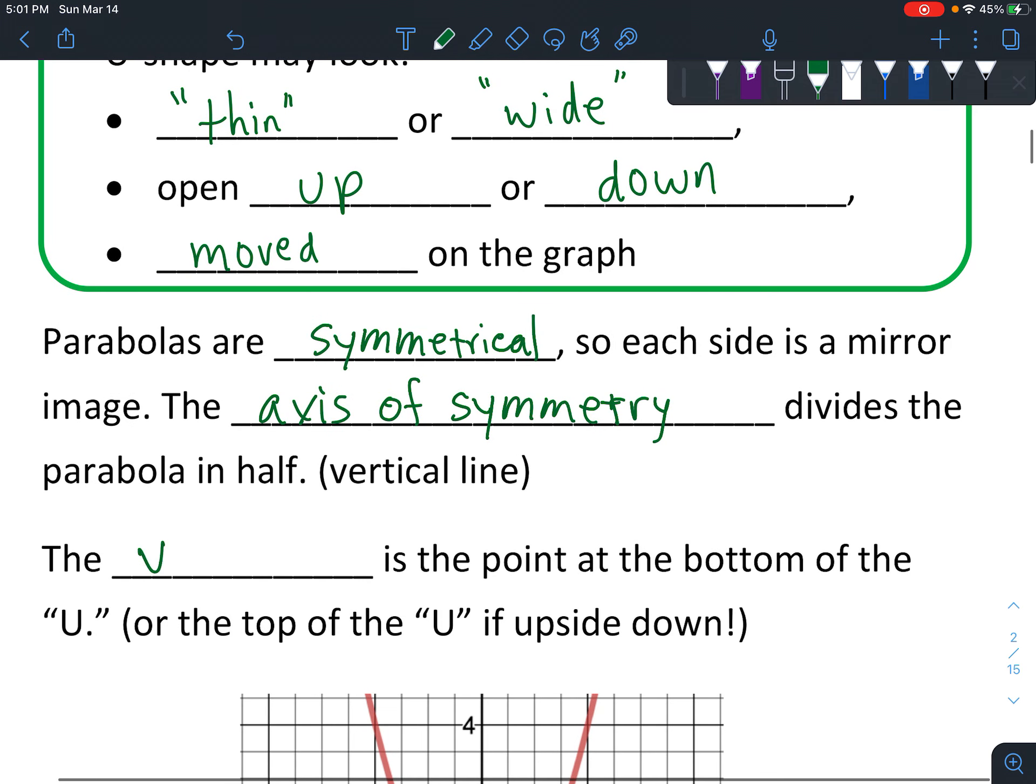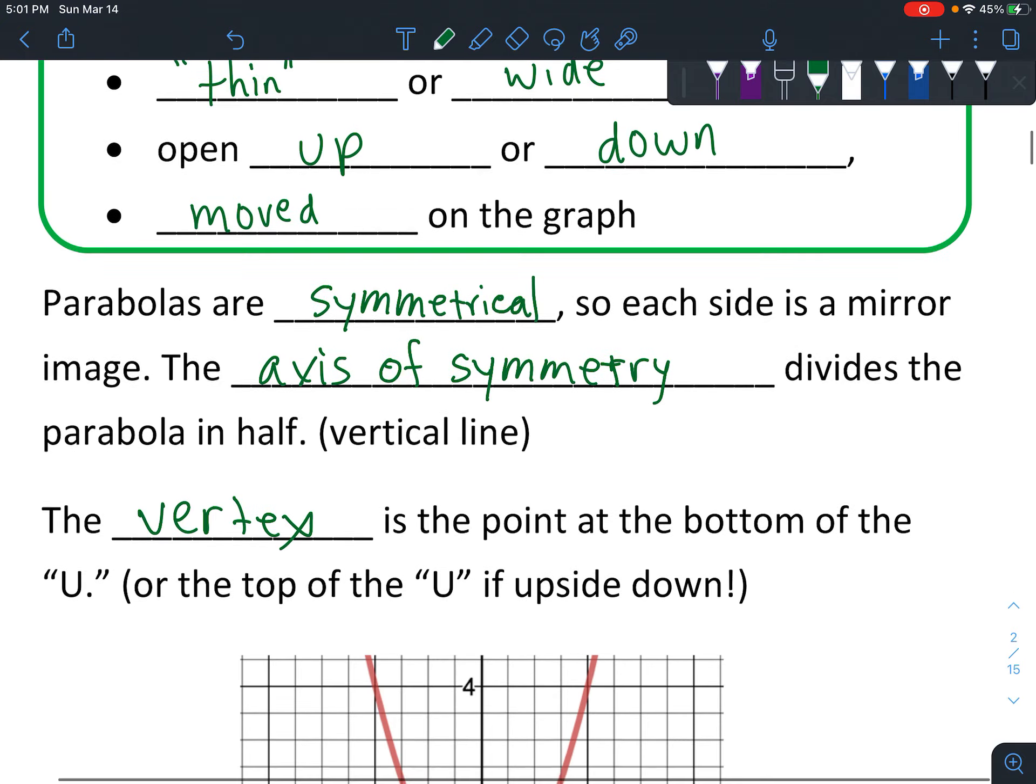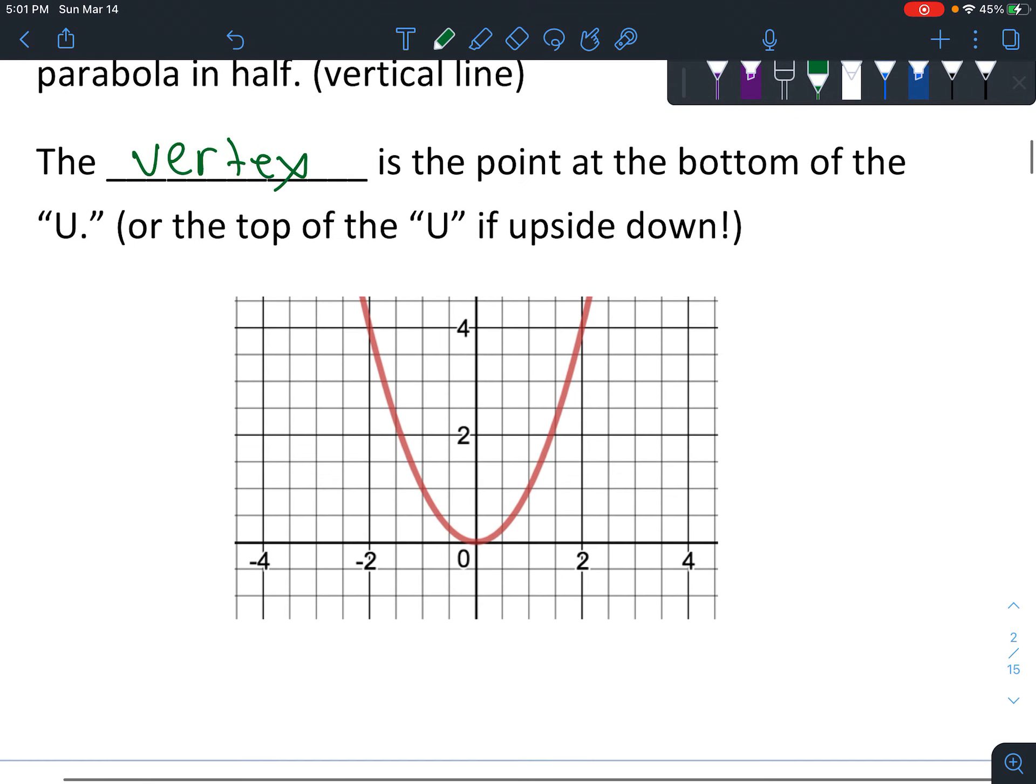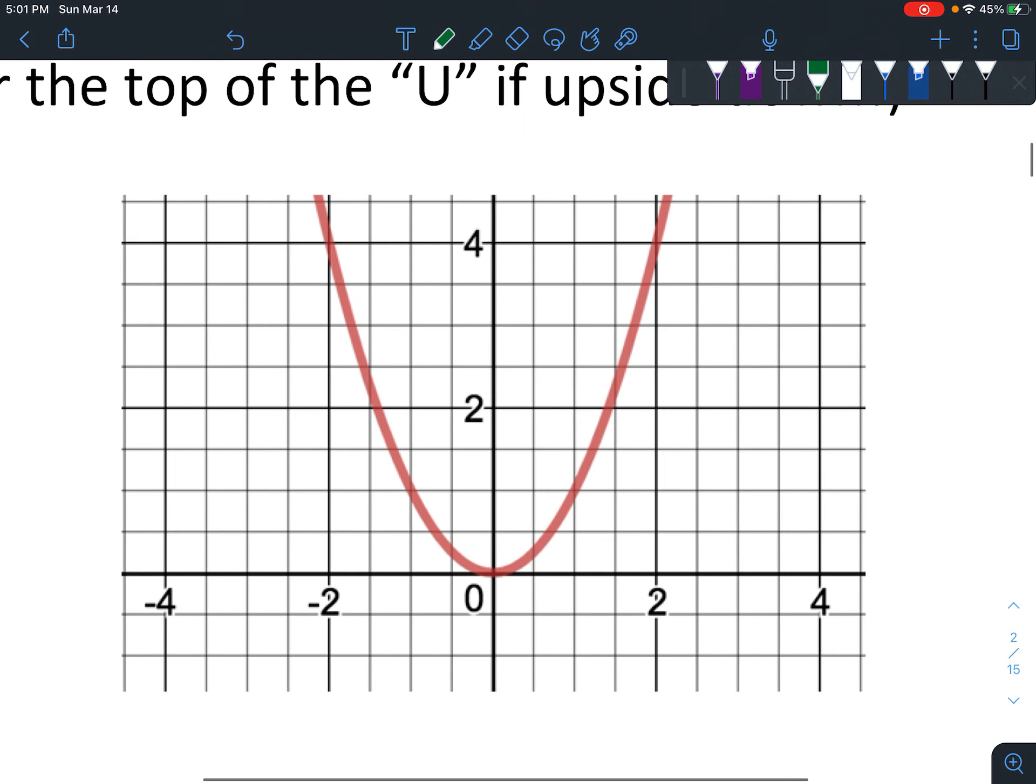It divides the parabola in half. And then the vertex is the point at the bottom of the U or the top of the U if it's upside down. So this would be the axis - let me find a color that shows up a little better. Let's say that this is the axis of symmetry going right down the center. You can see that it looks the same on each side.